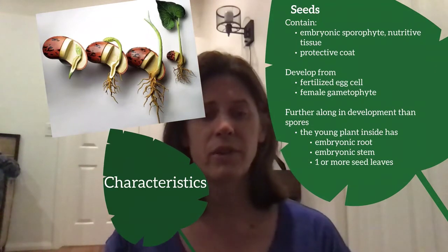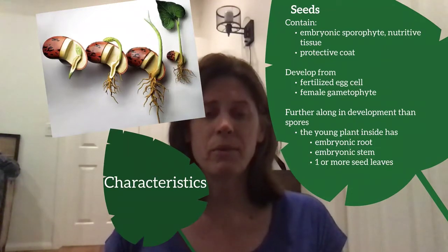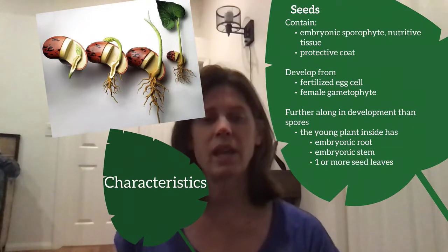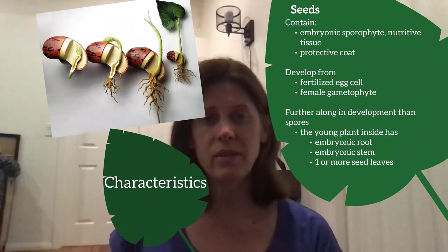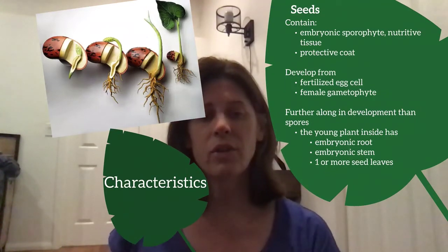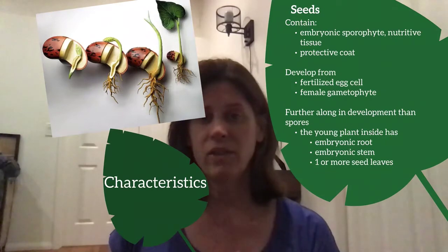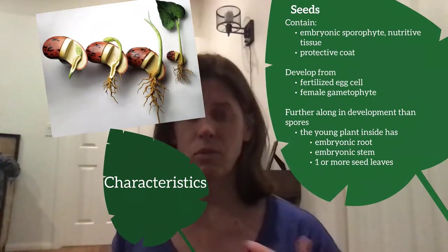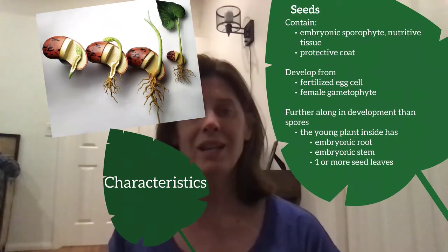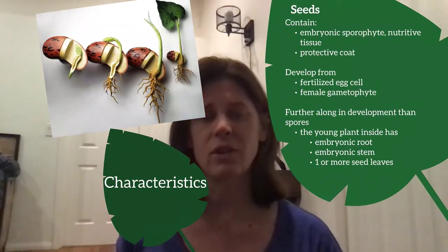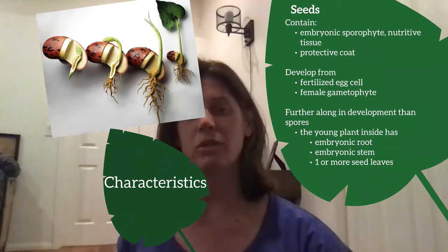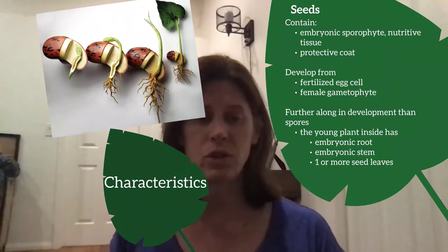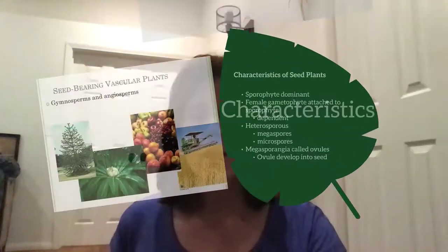Remember that seeds develop from the fertilized egg cell, which is developed from the female gametophyte. The part that goes dormant is the embryo, so the organism is actually further along in development than a spore is, giving it a better chance of survival. Single-cell spores will quickly die if they don't land on the right substrate, but a seed can remain dormant until environmental conditions are correct and then germinate — a really good adaptation allowing plants to move further from water and tolerate drier systems.